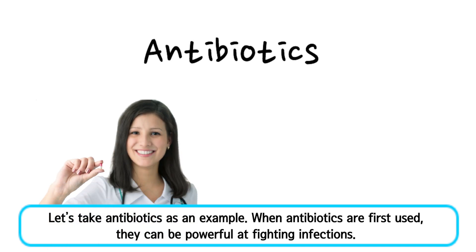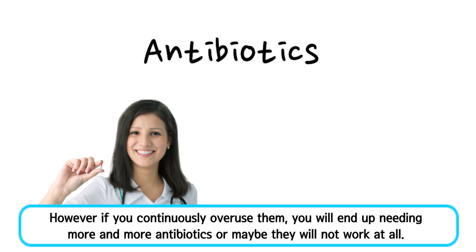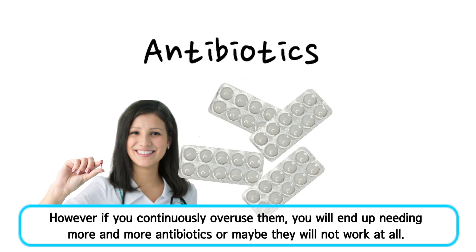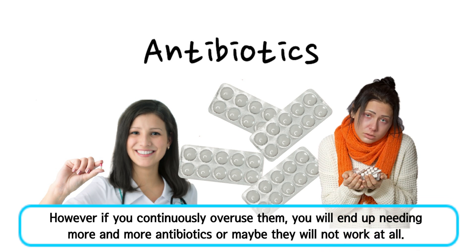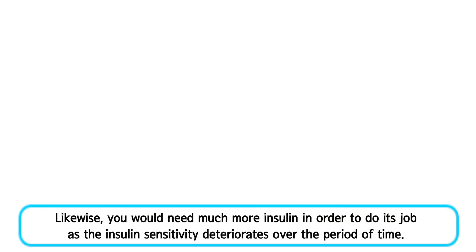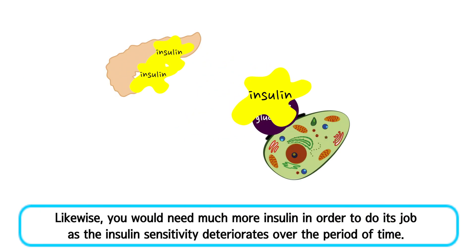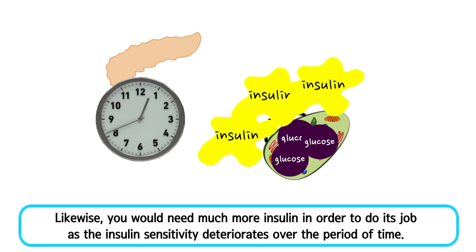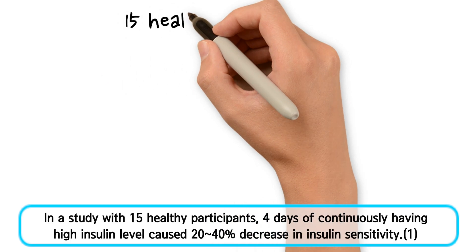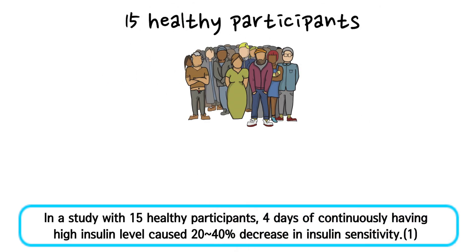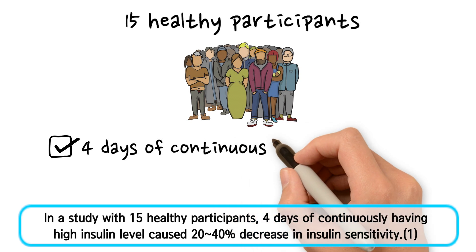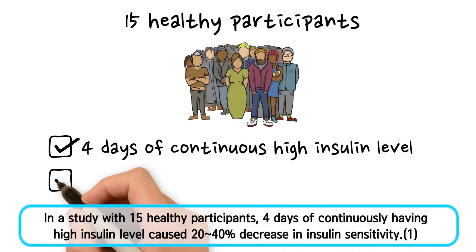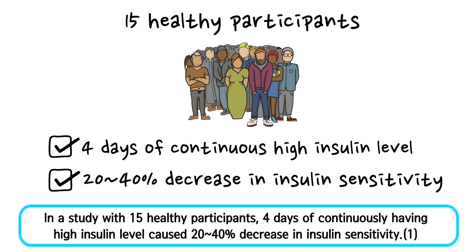Let's take antibiotics as an example. When antibiotics are first used, they can be powerful at fighting infections. However, if you continuously overuse them, you will end up needing more and more antibiotics — or maybe they'll not work at all. Likewise, you would need much more insulin to do its job as insulin sensitivity deteriorates over time. In a study with 15 healthy participants, 4 days of continuously having high insulin levels caused a 20–40% decrease in insulin sensitivity.